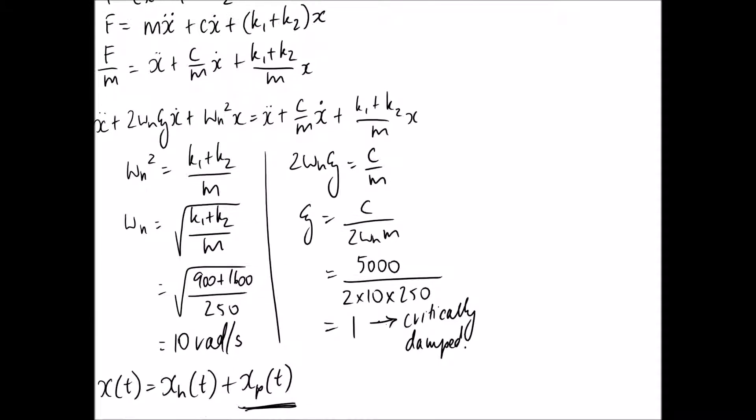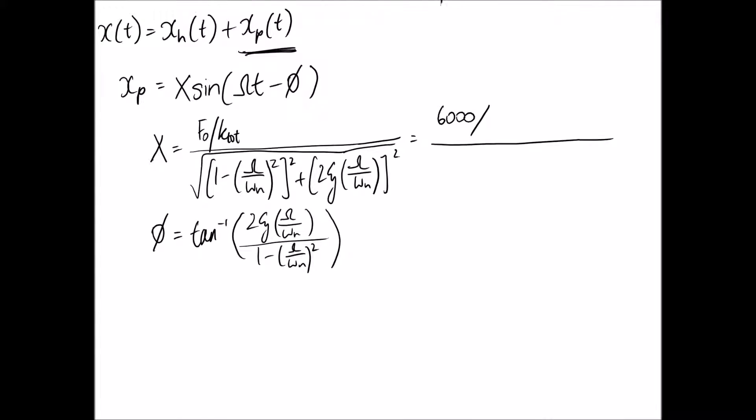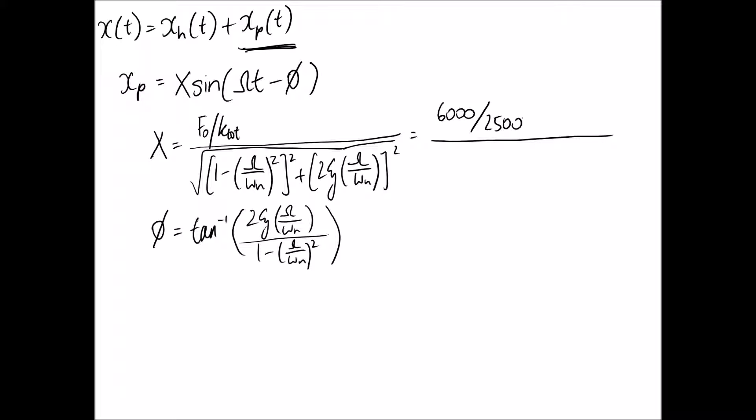So I'm going to substitute that in. K-total is going to be k1 plus k2, and we said that these were 900 and 1600. So the total is 2500 newtons per meter. So that's what goes in down here. So subbing in, we said that our forcing frequency was 5, our natural frequency is 10, and we worked out our damping ratio to be 1.